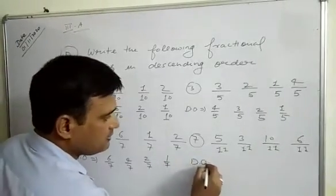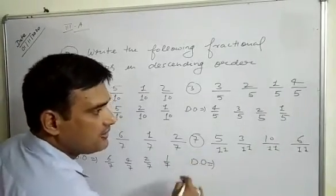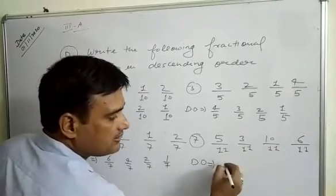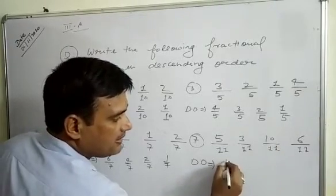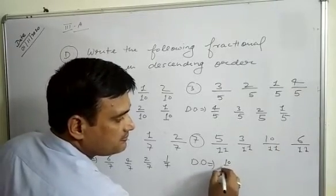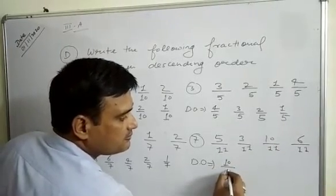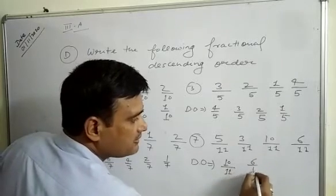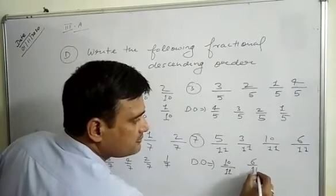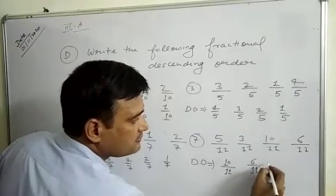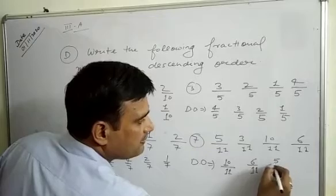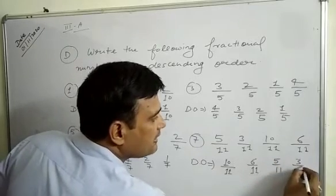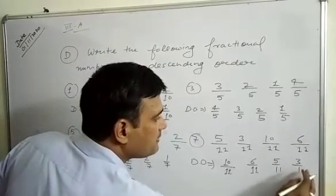In question 7, descending order: first we write the greatest number, 10 by 11, then 6 by 11, then 5 by 11, then 3 by 11.